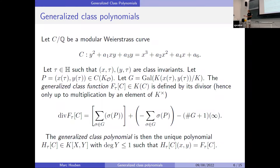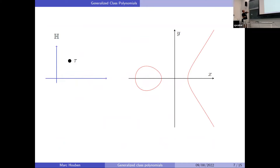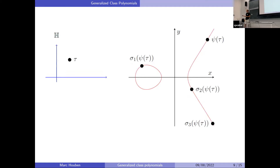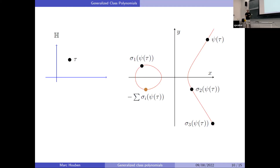Let me explain with a picture. I have tau in the upper half-plane and a function psi — this replaces the j-invariant for the regular Hilbert class polynomial. I take a pair of modular functions to a modular curve C and land on the curve; I take the Galois orbit of this point, getting points sigma_1(P), sigma_2(P), and so on. To make a function zero at all these points I also add minus their sum on the elliptic curve, obtaining a principal divisor, and then I can make a function zero at all these points with poles only at infinity.